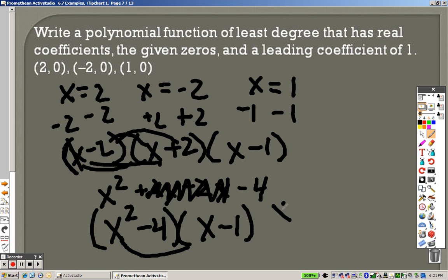x squared times x is x cubed. x squared times negative x is negative x squared. Negative 4 times x is negative 4x. And negative 4 times negative 1 is positive 4. And there is your answer. So if you wanted to, you could graph that. But those are your answers as well.